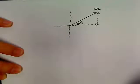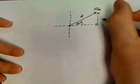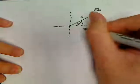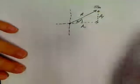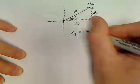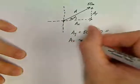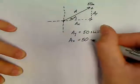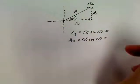What are the x and y components of this vector? All we'd have to do, we could call this vector a. If I want to find ay would be equal to 50 times the sine of 20. Ax would be equal to 50 times the cosine of 20.